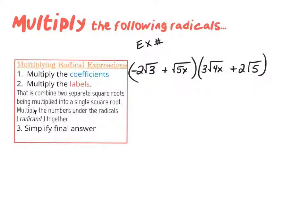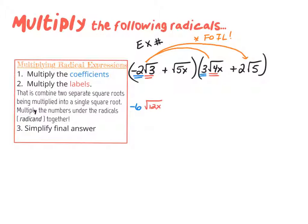Our last example has two sets of parentheses being multiplied, so we use the FOIL method. Multiplying the first terms: −2 times 3 is −6, and √3 times √(4x) joins to √(12x), giving −6√(12x). For the outer terms: −2 times 2 is −4, and √3 times √5 gives √15, so we get −4√15.